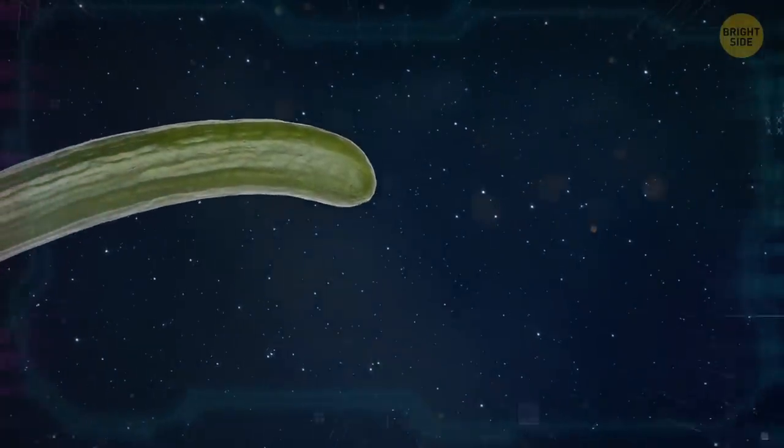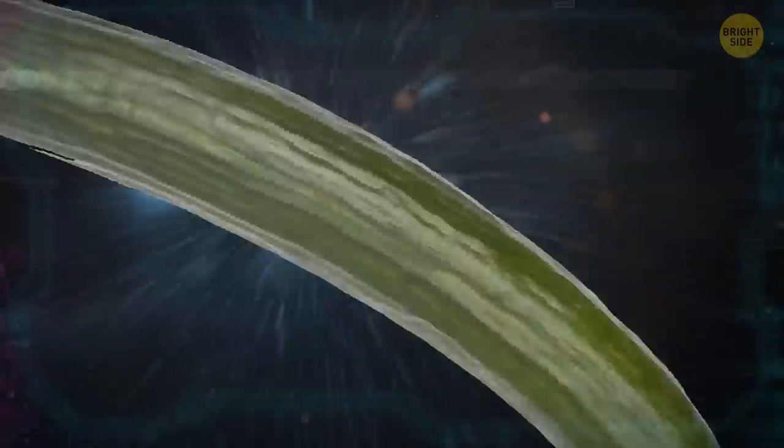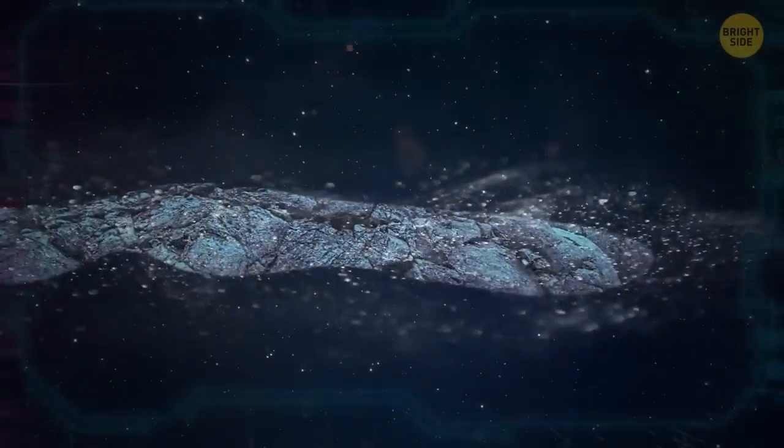There's a huge space cucumber floating through the galaxy, and no one really knows where it came from or why it's there. Okay, it's not exactly a cucumber, or a pickle. It's more likely a super-elongated rock.